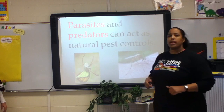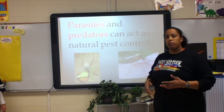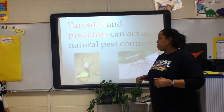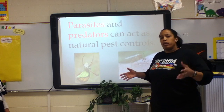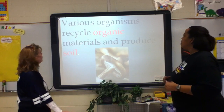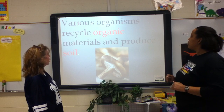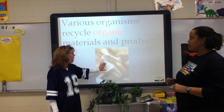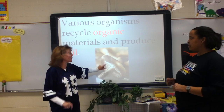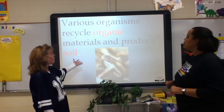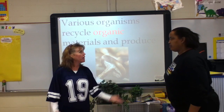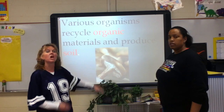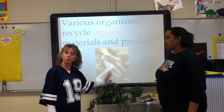Parasites and predators can act as natural pest controls because they keep the population from growing too big — like a spider eating a butterfly so there aren't too many butterflies on our planet. Various organisms also recycle organic materials and produce soil. That's a decomposer. We have decomposers to recycle — we have a compost bin right here in the classroom. This also helps biodiversity and ecosystem stability to recycle nutrients in the ecosystem.